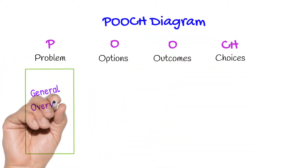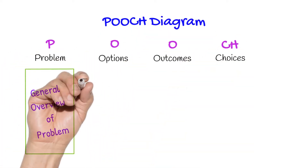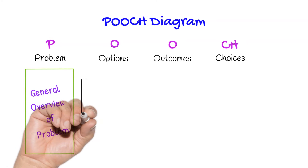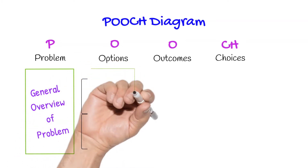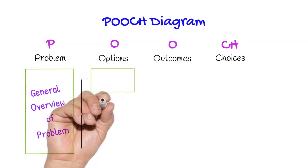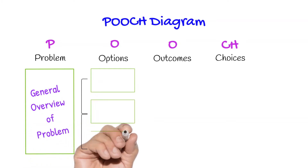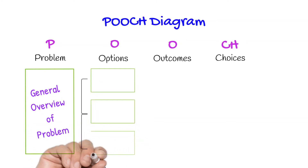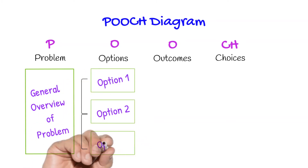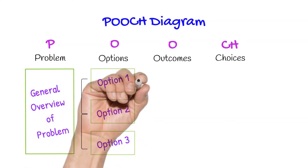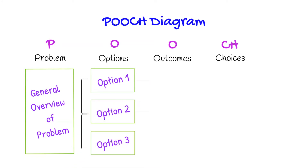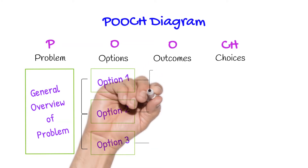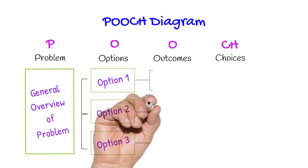Let's start with the POOCH diagram. In the POOCH diagram you lay out this strategy to give a general overview of the problem. You then look at the options that you are faced with, all the possible outcomes that might come from these options, and then the most suitable choice for you to make.